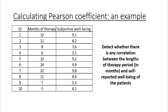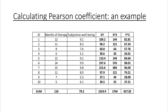Let us consider the following problem. We have 12 patients and we want to analyze whether there is any correlation between the period of therapy measured in months and subjective well-being — basically, people self-report how well they feel, for example calm, satisfied, and so on. Having this data, you have to calculate the product of X and Y for each patient, the square of X and the square of Y, and then find the sum for each column.